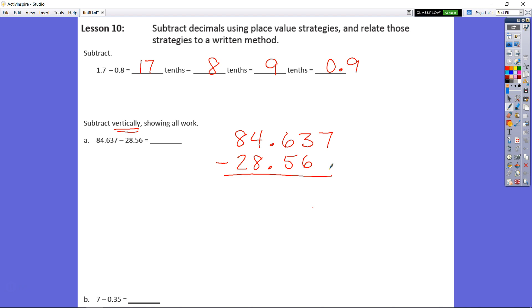If we're subtracting these two numbers we have 84 and 637 thousandths minus 28 and 56 hundredths. We know that if we add a placeholder here that 56 hundredths is now set as 560 thousandths which is the same thing because 56 hundredths is equal to 560 thousandths.